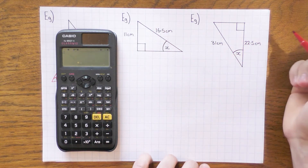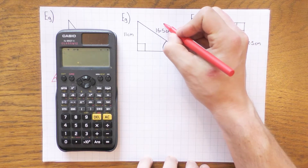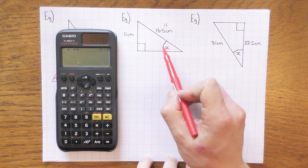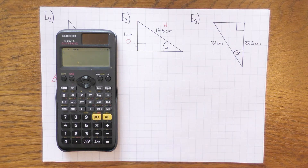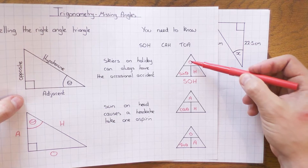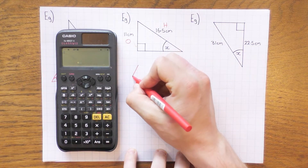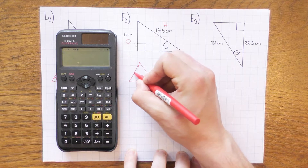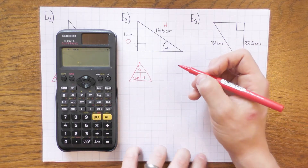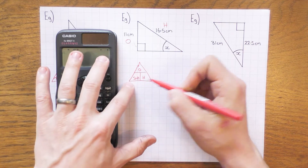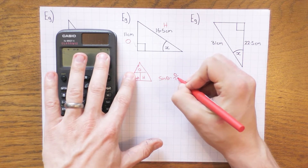On to the next one — again I've been given two lengths and I'm after the angle. This side is the longest side, opposite the right angle, so that is the hypotenuse. And this side here is opposite the angle I want, so that's the opposite. Going back to the three triangles, this one has the opposite and the hypotenuse, so I'll be using sine. Sine theta equals opposite over hypotenuse.